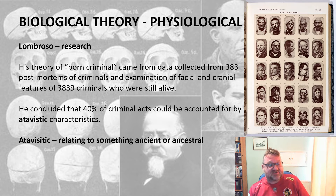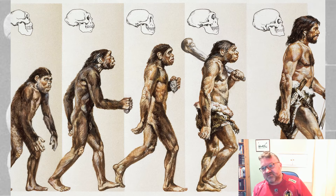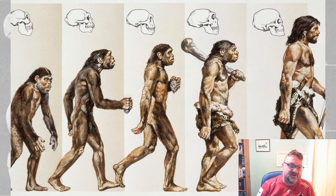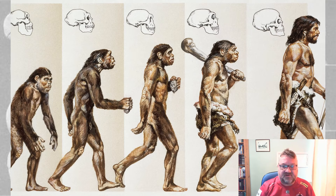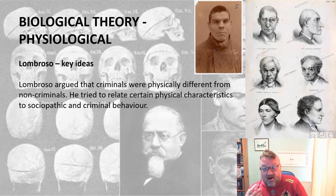Atavistic really means relating to something ancient or ancestral — something from earlier history. Using the famous Ascent of Man picture, what Lombroso is saying is that criminals are more toward the ape-like end of the spectrum, because they are a lower order of humanity. He argues that criminals are physically different from non-criminals.